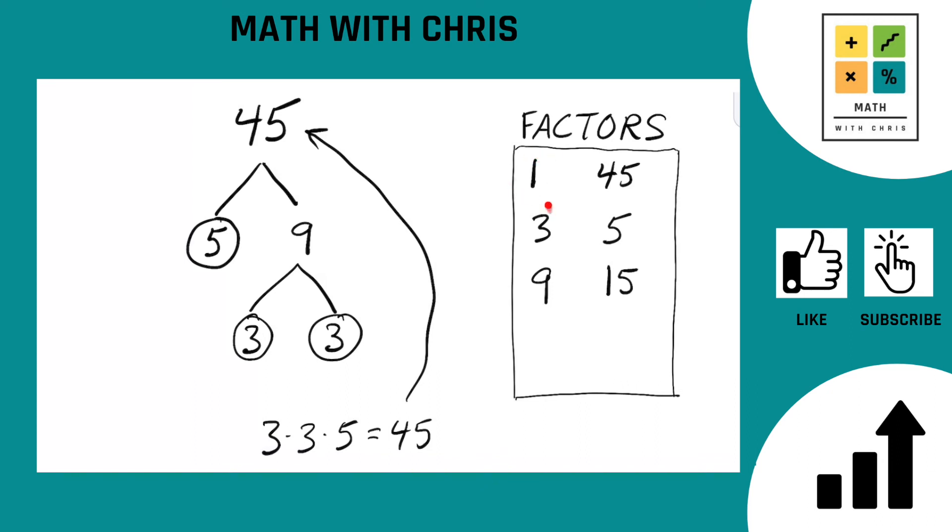They are in order: 1, 3, 5, 9, 15, and of course 45. Done and done. Factors of 45.